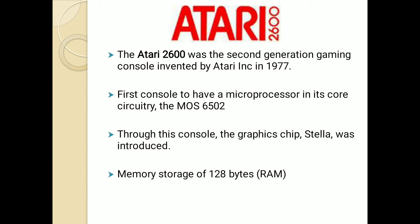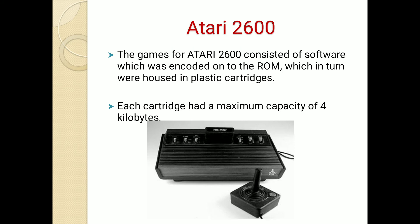Second generation gaming console: The Atari 2600 was the second generation gaming console, invented by Atari Corporation in 1977. It was the first console to have a microprocessor in its core circuit, the MOS 6502. Through this console, the graphics chip Stella was introduced, with a memory size of 128 bytes. The games of the Atari 2600 consisted of software encoded on ROM, which was housed in plastic cartridges, each with a maximum capacity of 4 KB.